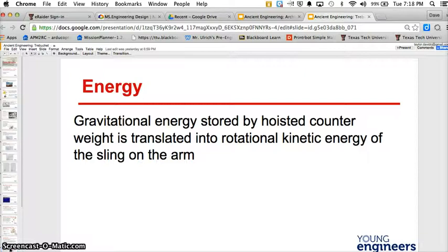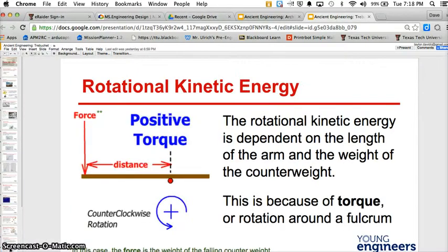Energy. Gravitational energy stored by hoisted counterweight is translated into rotational kinetic energy of the sling on the arm. The rotational kinetic energy is dependent on the length of the arm and the weight of the counterweight. This is because of torque or rotation around a fulcrum.